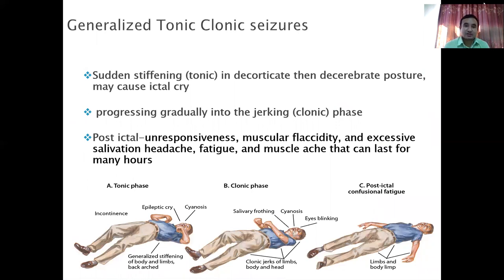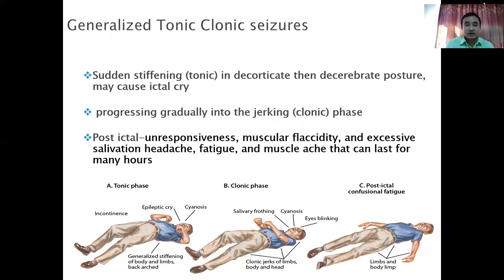Second is generalized tonic-clonic Caesar, which is the classical Caesar we see in day-to-day clinical practice. There is stiffening and relaxation of the muscles — jerky movements. The patient also has frothing from the mouth and can have urinary incontinence. These are the typical clinical presentations of GTCS. After termination of GTCS, most patients will have body ache, confusion, and headache — this is called the postictal state — as it can take some hours to recover to the normal state.